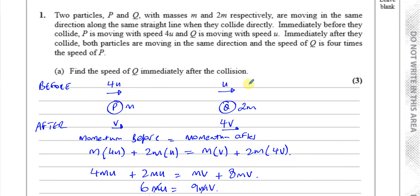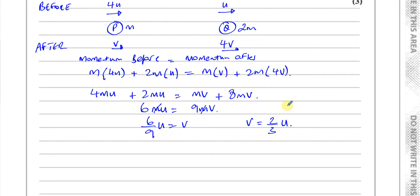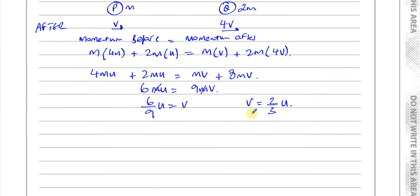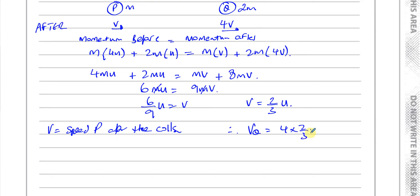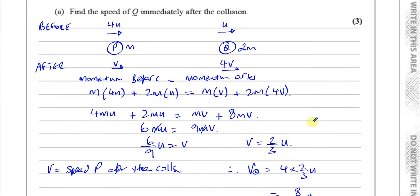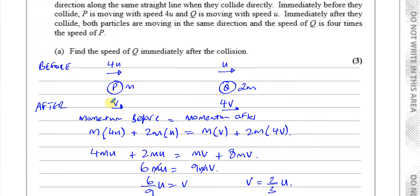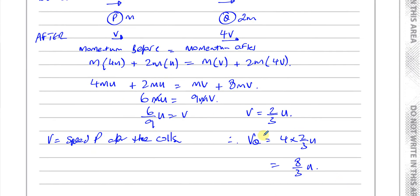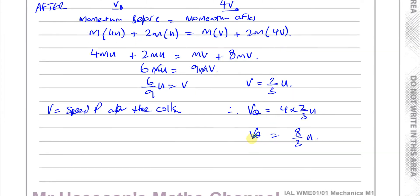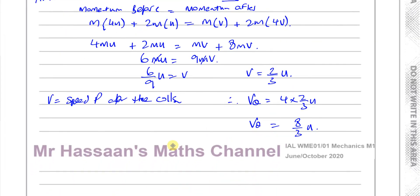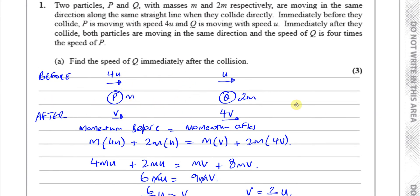They asked us to find the speed of Q immediately after the collision. V is the speed of P after the collision. Therefore, the speed of Q after the collision is 4 times 2/3 U, which is 8/3 U. That's the answer for Part A. They don't ask for direction — they already told us both are going in the same direction, and it's quite obvious it's the same direction in which they were moving before.